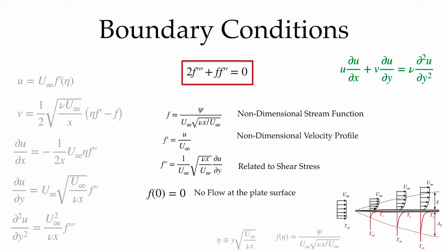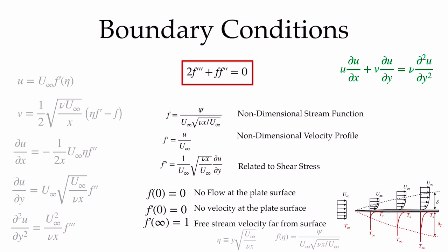The boundary conditions are: first, f(0) = 0 — at the surface there is no flow, so the stream function is zero. Second, f-prime(0) = 0 — the u-velocity is zero at the surface, satisfying the no-slip condition. Third, f-prime(∞) = 1 — the velocity far away from the plate equals u_infinity, giving a non-dimensional velocity of 1. These three boundary conditions are all we need for the hydrodynamic solution, though the far-field condition will require some additional handling when we actually solve it.